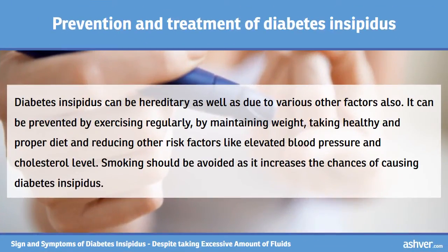Diabetes insipidus can be hereditary as well as due to various other factors. It can be prevented by exercising regularly, by maintaining weight, taking a healthy and proper diet, and reducing other risk factors like elevated blood pressure and cholesterol level. Smoking should be avoided as it increases the chances of causing diabetes insipidus.